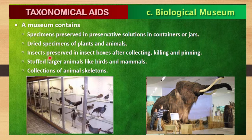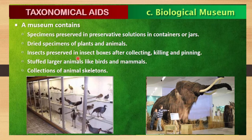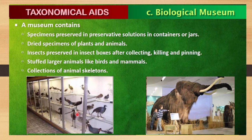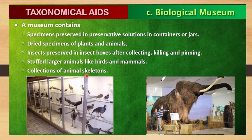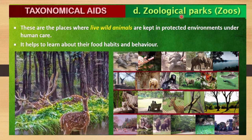In museums, insects are collected, killed, pinned, and preserved in special insect boxes. Larger animals like birds and mammals cannot fit in jars, so they are stuffed — internal organs are removed and the cavity is filled with chemicals and grasses. Collections of animal skeletons are also present in biological museums.